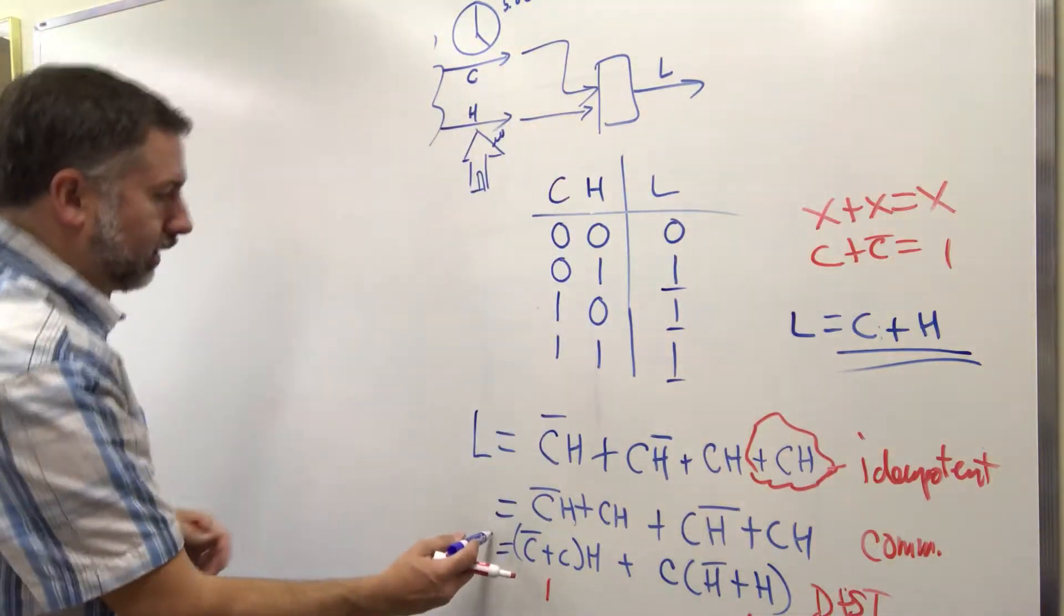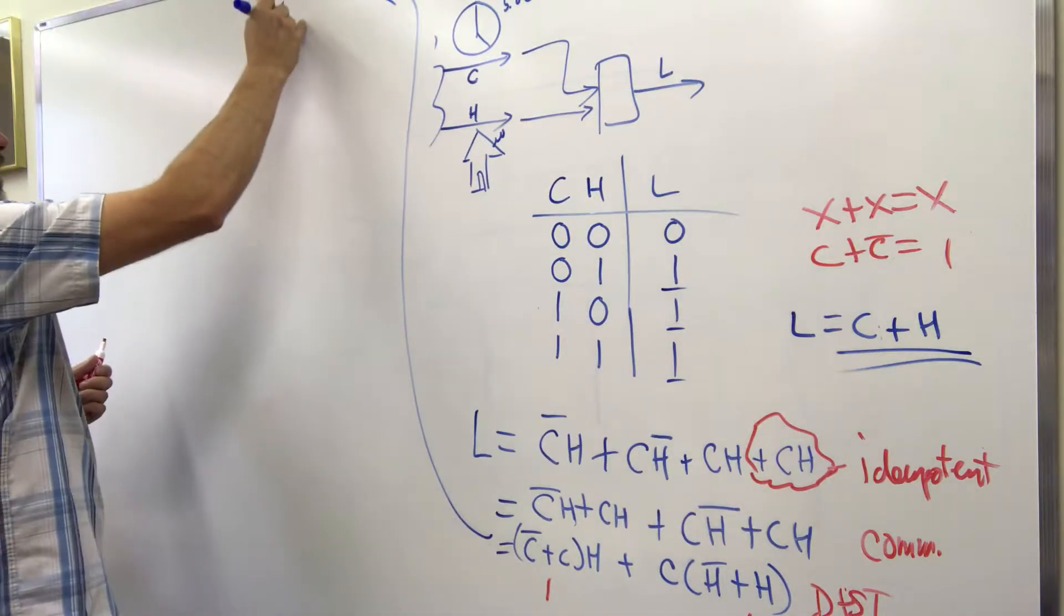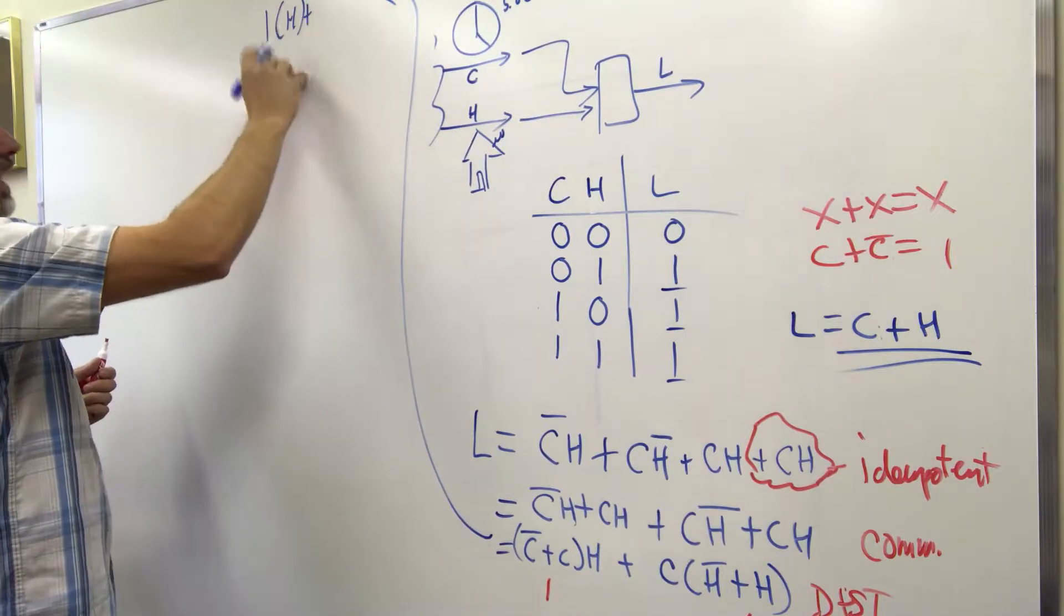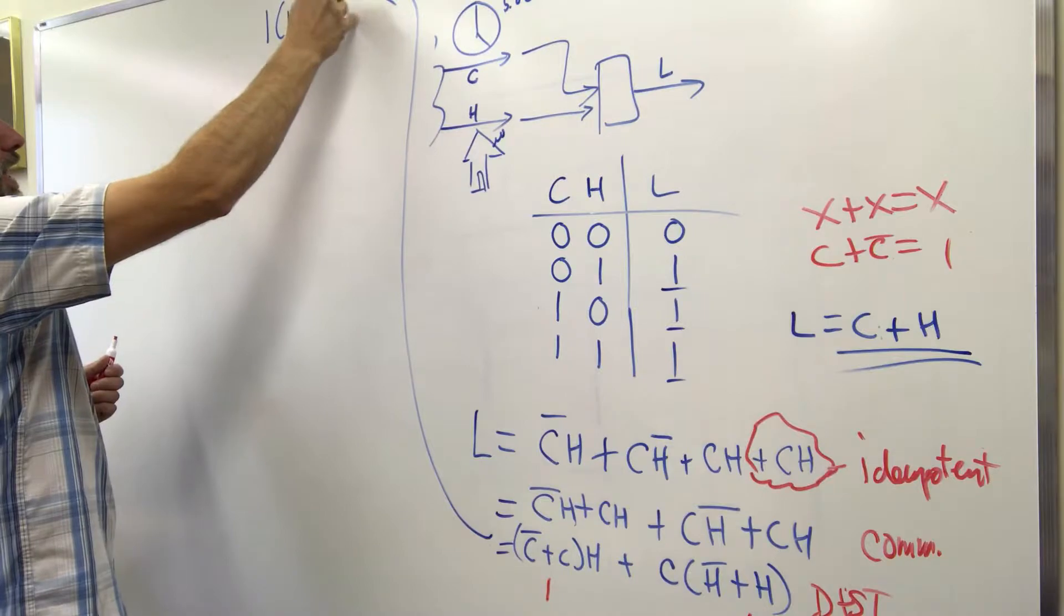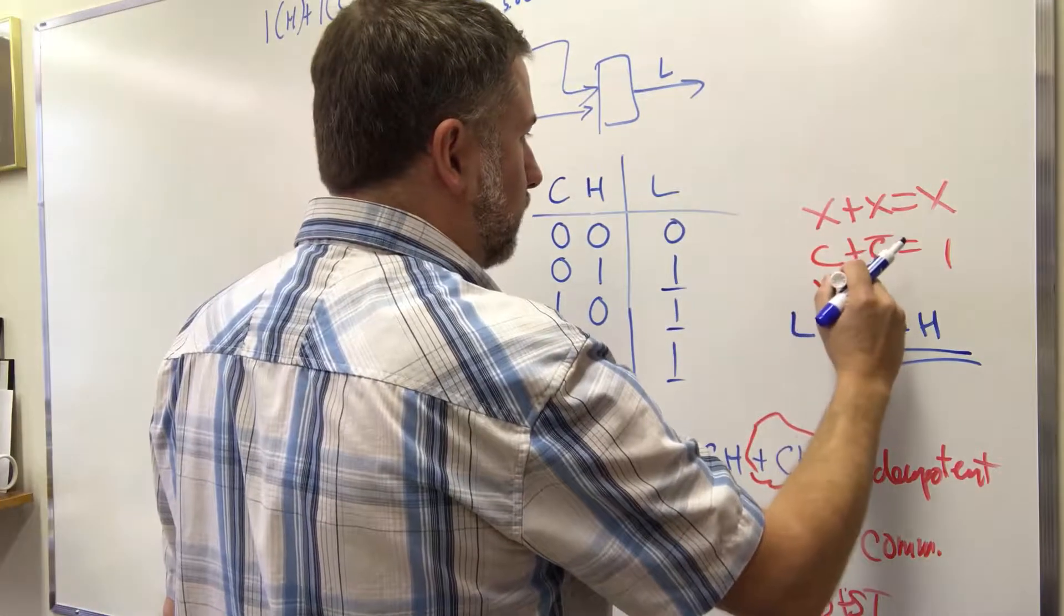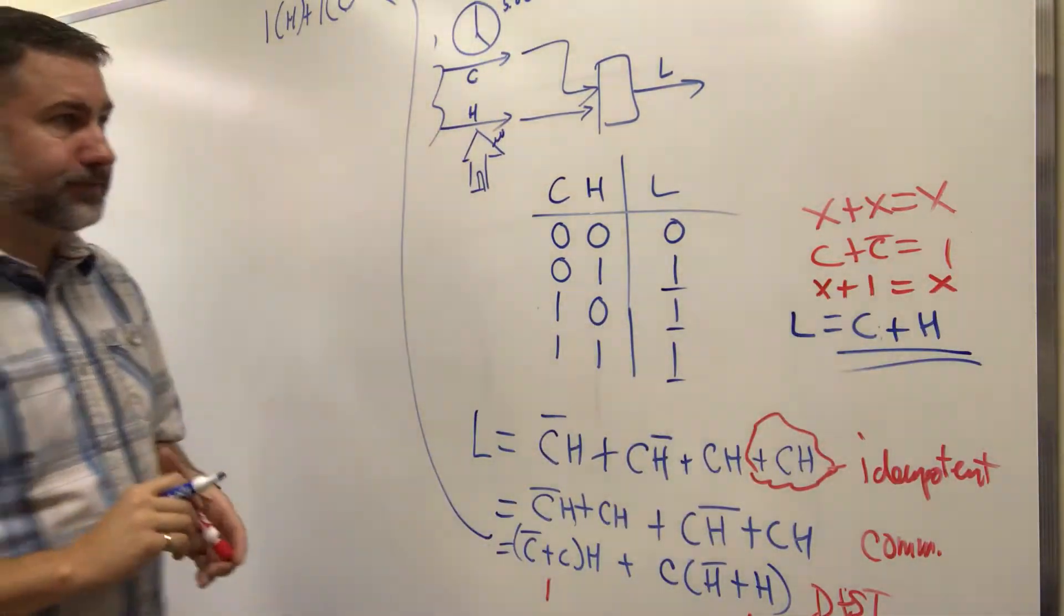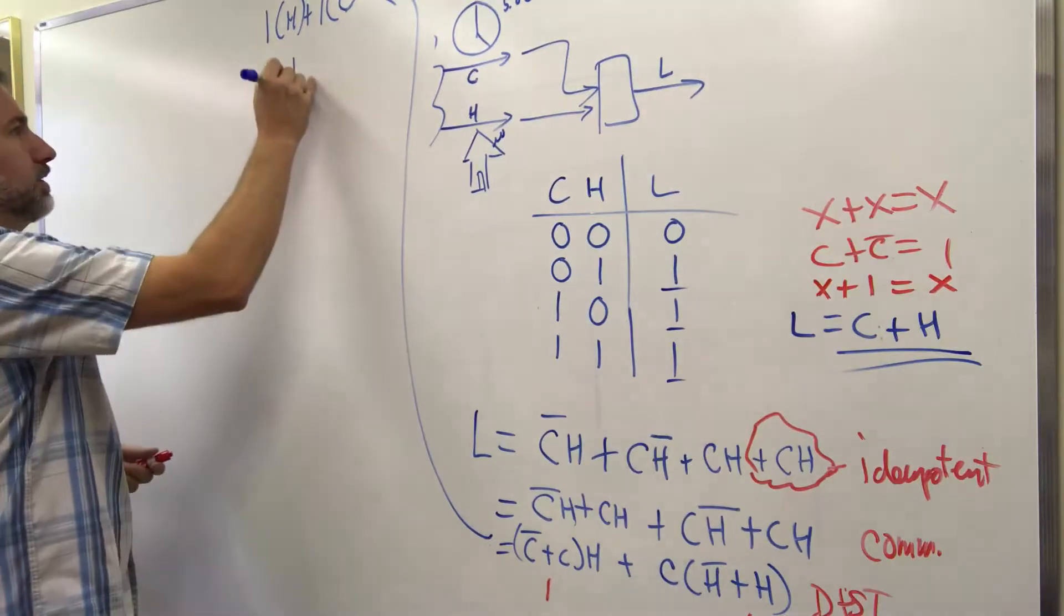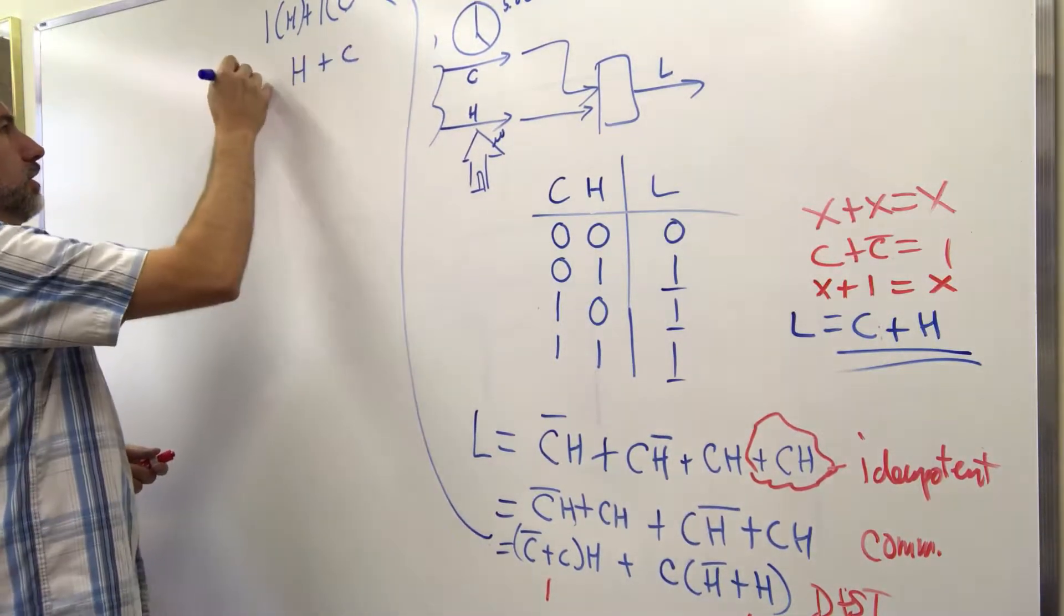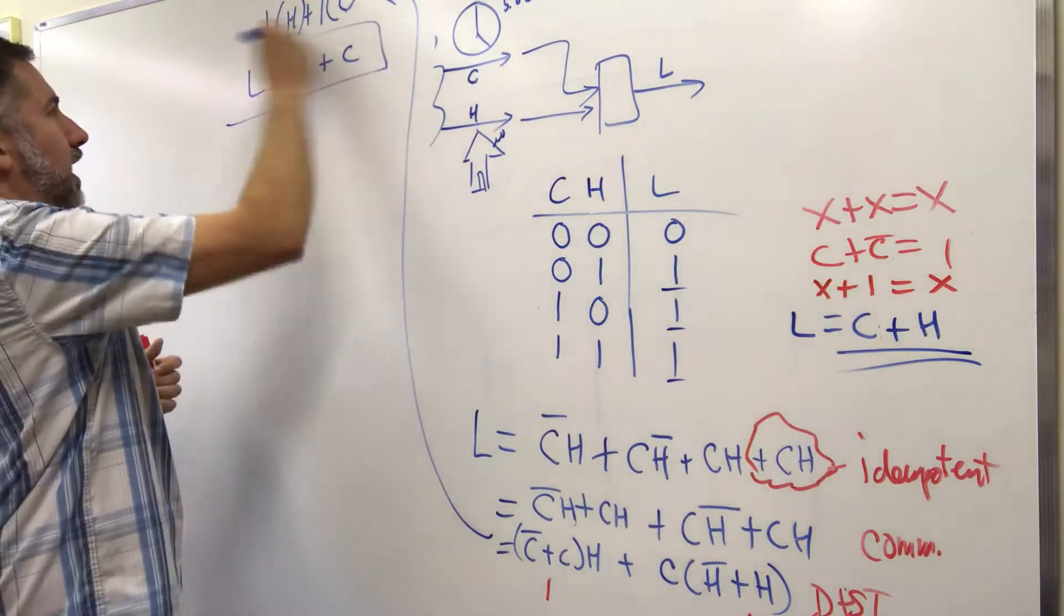So up here, carrying on, we have one and H or one and C. And we say X or 1 equals X, which is an identity, which means this equals H or C. L equals H or C. And this is what we expected to happen at the beginning, right?